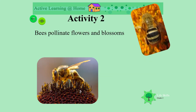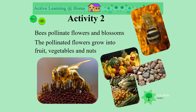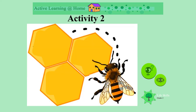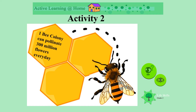Bees pollinate flowers and blossoms. Look at all the pollen all over the bee's body. The pollinated flowers grow into fruit, vegetables and nuts — yum for us to eat. One bee colony can pollinate more than 3 million flowers in a day. Wow, that's a lot!